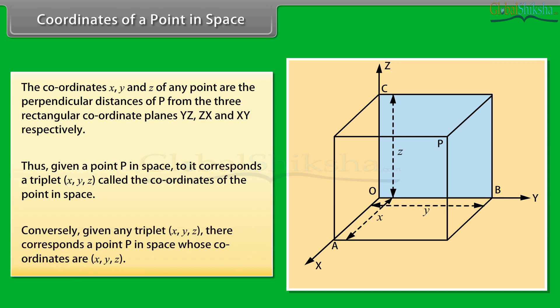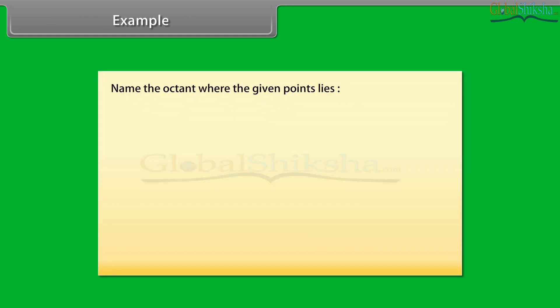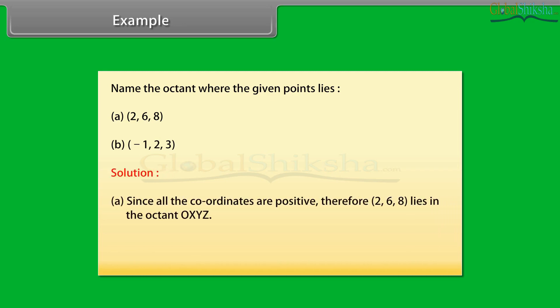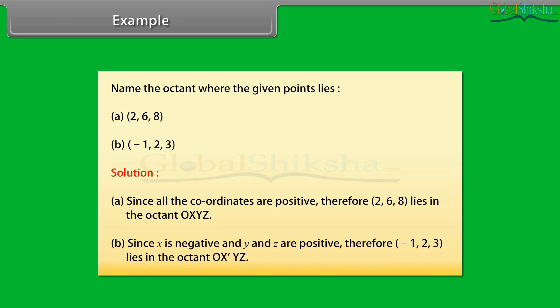Conversely, given a triplet (x, y, z), there corresponds a point P in space whose coordinates are (x, y, z). Example: name the octant where the given points lie. Solution: since all the coordinates are positive, therefore (2, 6, 8) lies in the octant OXYZ. Since x is negative and y and z are positive, therefore (−1, 2, 3) lies in the octant OX'YZ.